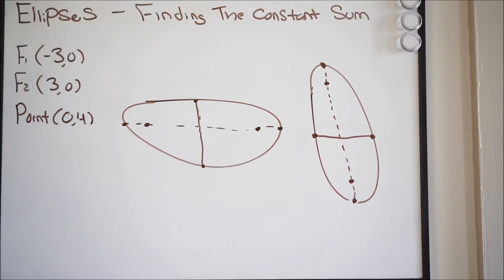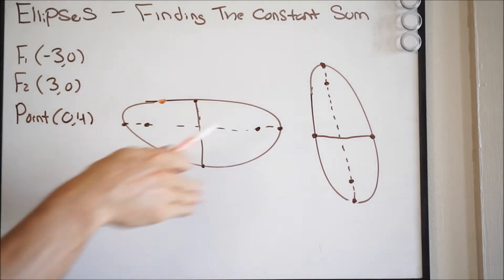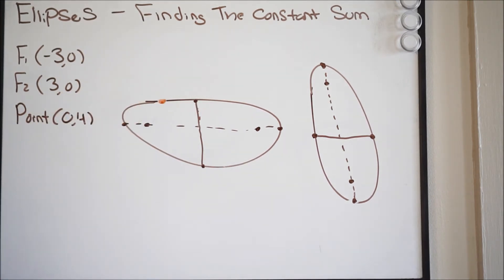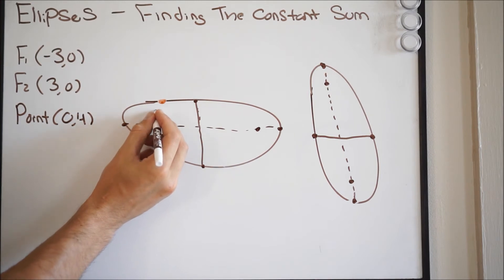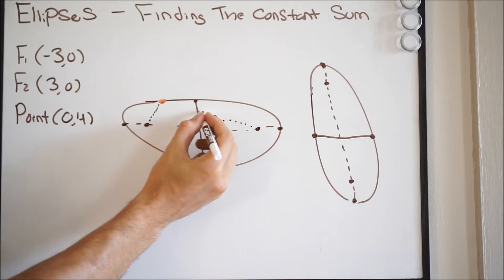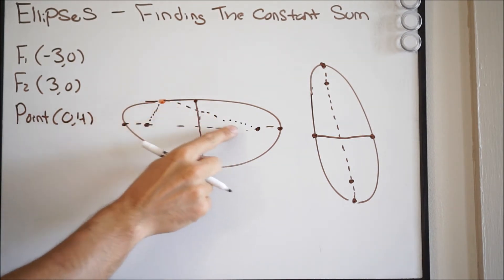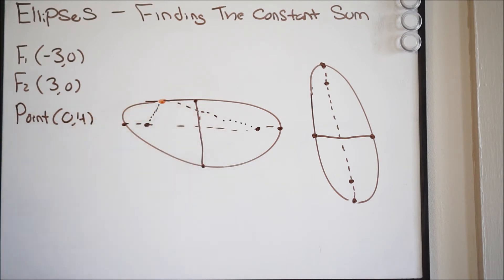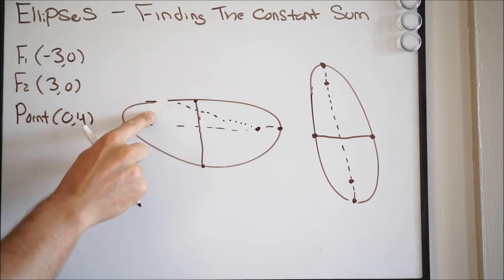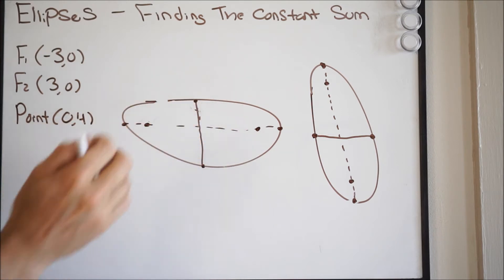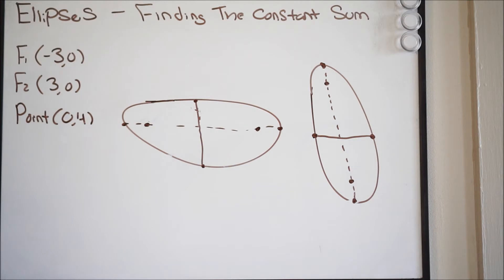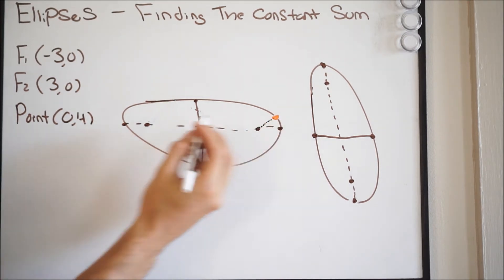The constant sum refers to a relationship between the foci. If you place a point anywhere on the ellipse and draw a line from each focus to that point, the sum of those two distances is the constant sum. The key thing is it doesn't matter where you place that point — the constant sum will remain the same every time.